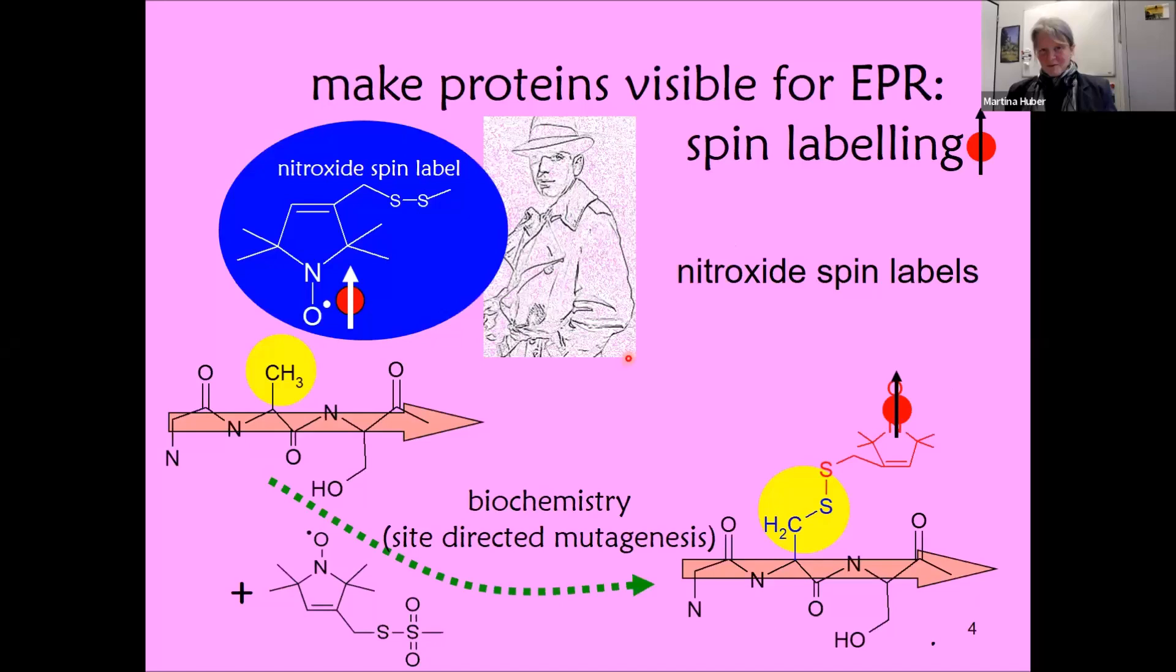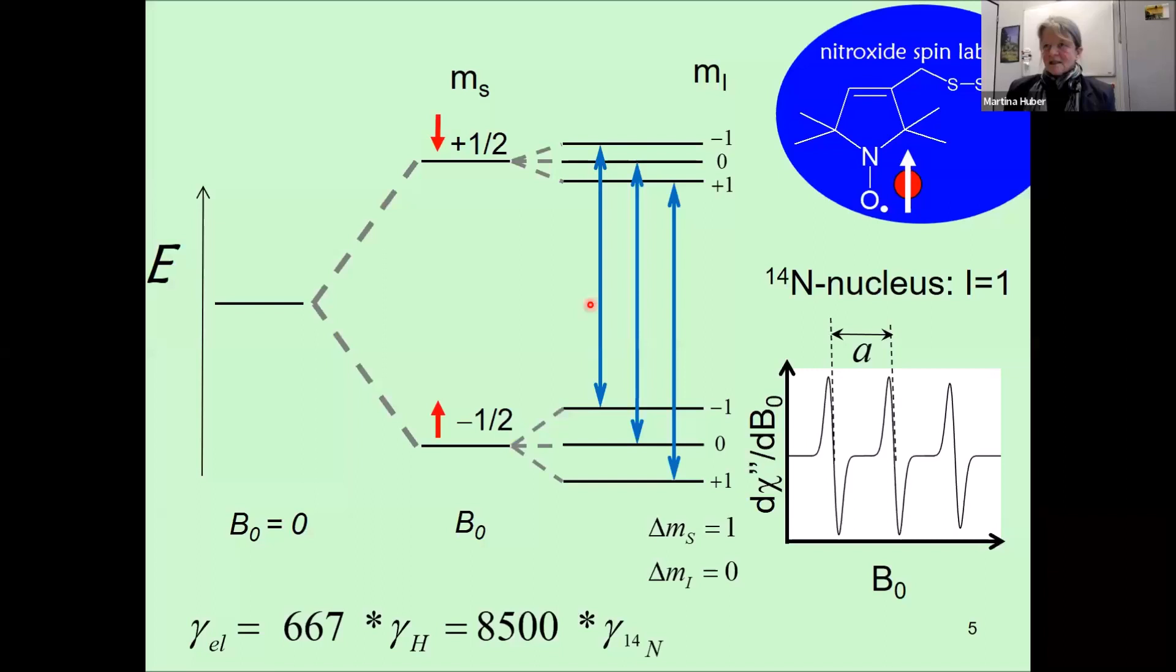We all realize that alpha-synuclein does not contain unpaired electrons, and if we want to do electron paramagnetic resonance we need unpaired electrons. I'm going to talk about nitroxide spin labels which can be introduced at a position of interest by site-directed mutagenesis. We can put in our probe and make this molecule spy for us, telling us what the protein is doing.